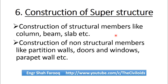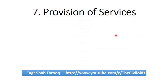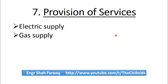After completing construction work, the next step is provision of services. When done with construction, the next step is to provide electric supply, gas supply, and water supply. Nowadays the most commonly used and effective method for electric and water supply is the concealed method, in which pipes are embedded in concrete and masonry work.